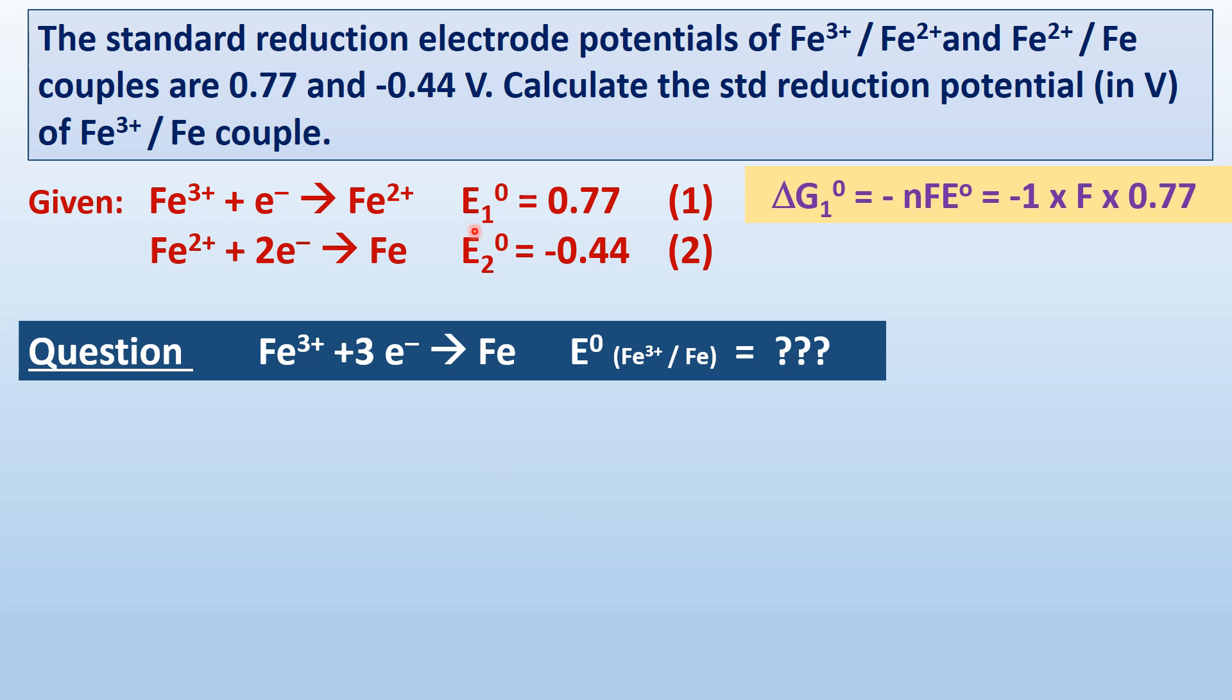If you add equations 1 and 2, you will get this equation, but E₁⁰ plus E₂⁰, it is not a thermodynamic quantity. Therefore, it cannot be added as it is. Therefore, it is converted to thermodynamic quantity.